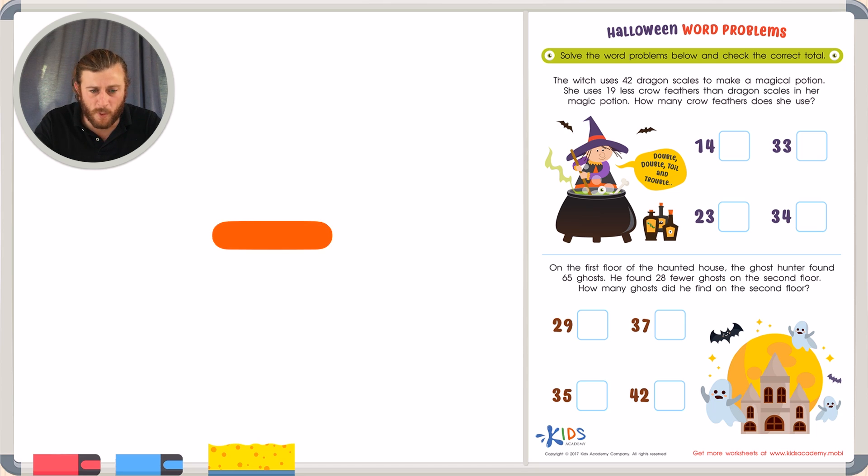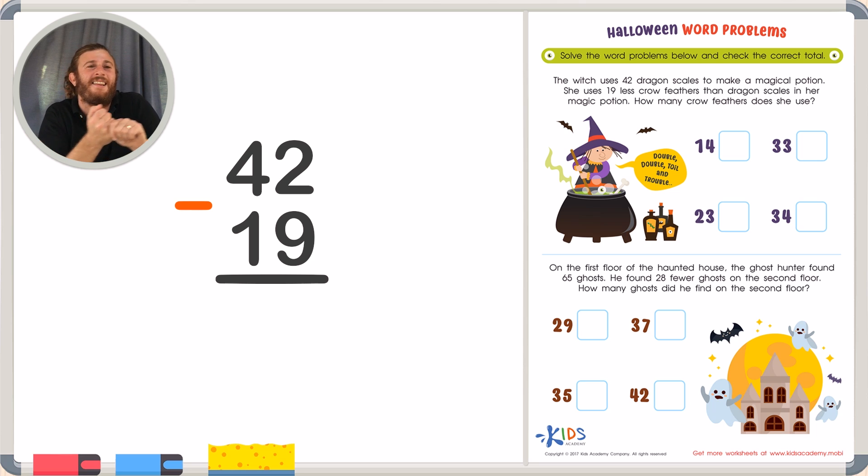So if we took her 42 dragon scales and we subtracted 19, because she said there's 19 less crow feathers. So to find out how many crow feathers there are, we need to take away 19. And then that will tell us how many crow feathers she has. So let's subtract using regrouping to figure out how many crow feathers she has.